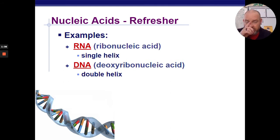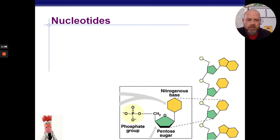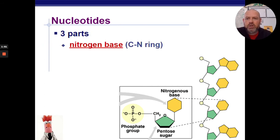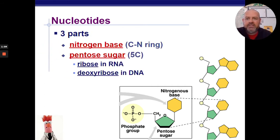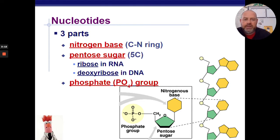RNA is also a nucleic acid — it's a single helix versus a double. Ribonucleic acid versus deoxyribonucleic acid. The monomers are nucleotides: a nucleotide is a sugar, a phosphate, and a base. The base is one of those nitrogenous rings — adenine, guanine, cytosine, thymine, or uracil if you're an RNA molecule. They also have different sugars: ribose in RNA and deoxyribose in DNA, plus that phosphate group.